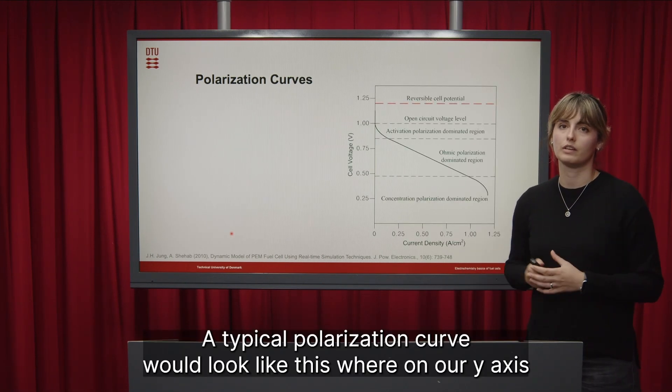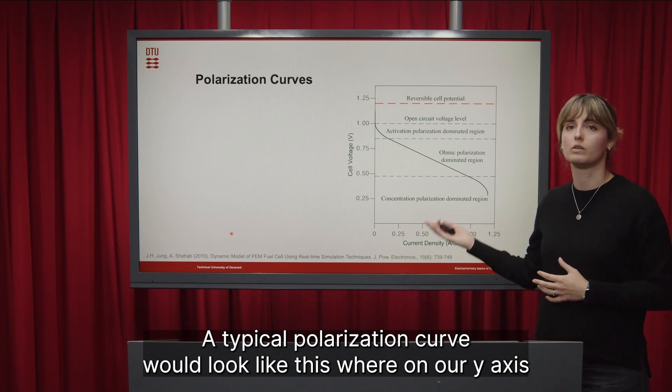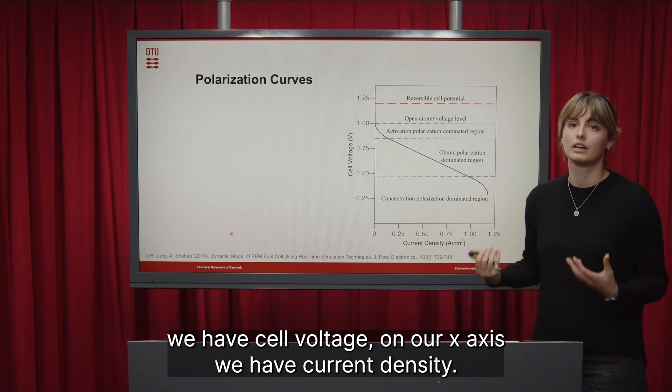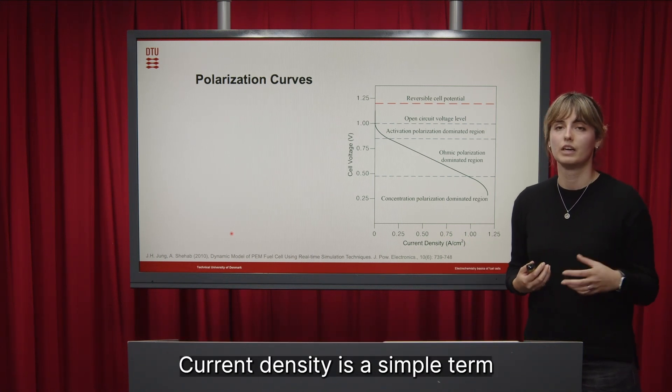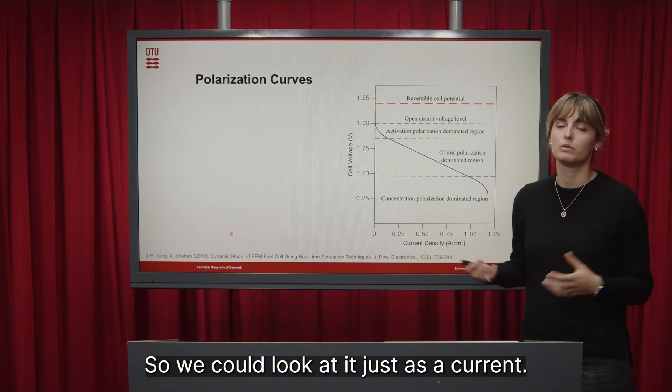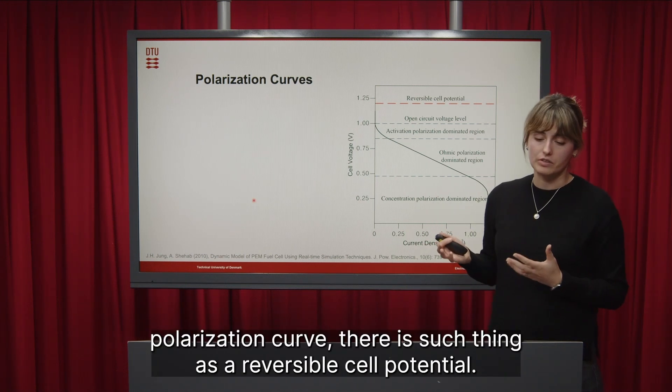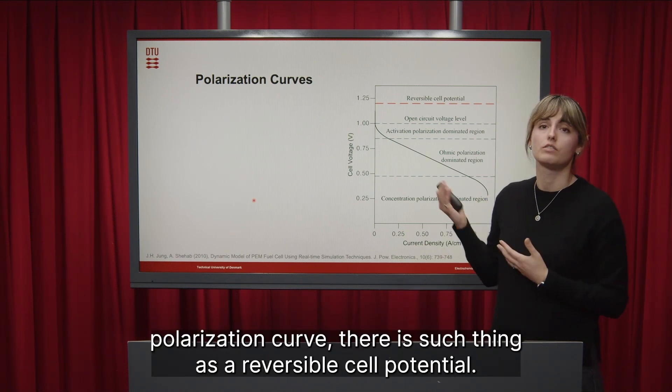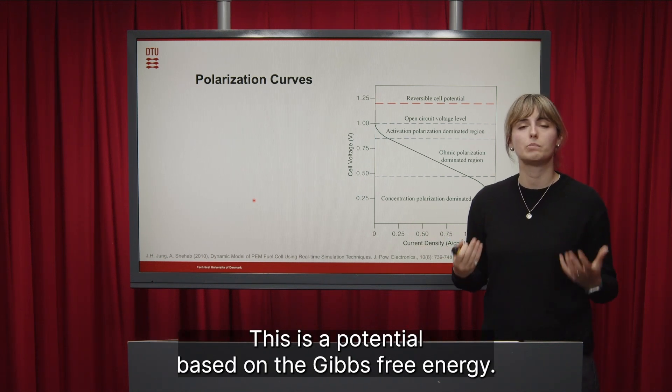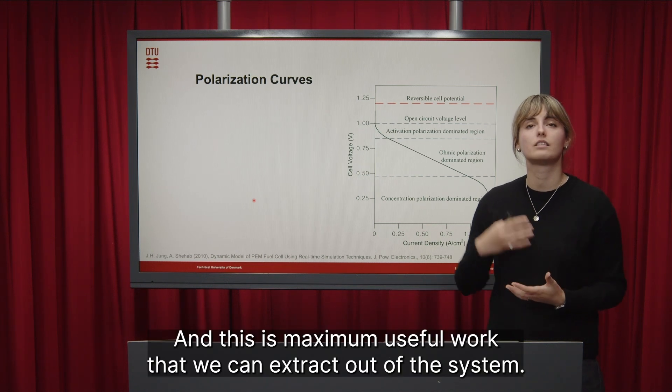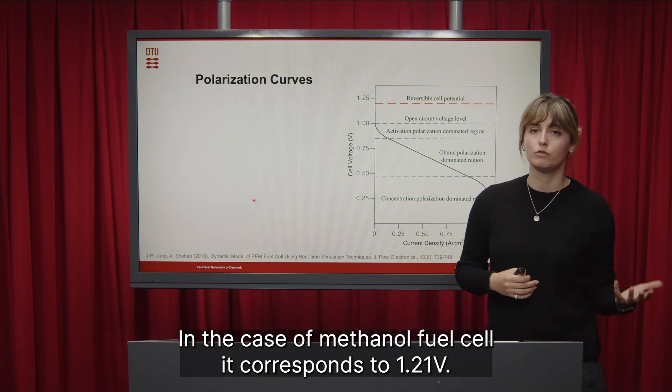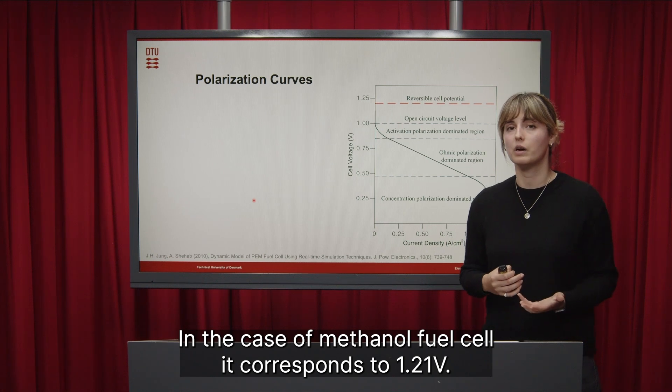A typical polarization curve would look like this when on our y-axis we have cell voltage and our x-axis we have current density. Current density is a simple term defining electricity passed through the area of the cell, so we could look at it just as a current. So when we are looking at our polarization curve there is such thing as a reversible cell potential and this is the potential that we previously calculated. This is a potential based on the Gibbs free energy and this is maximum useful work that we can extract out of the system. In the case of methanol fuel cell it corresponds to 1.21 volts.